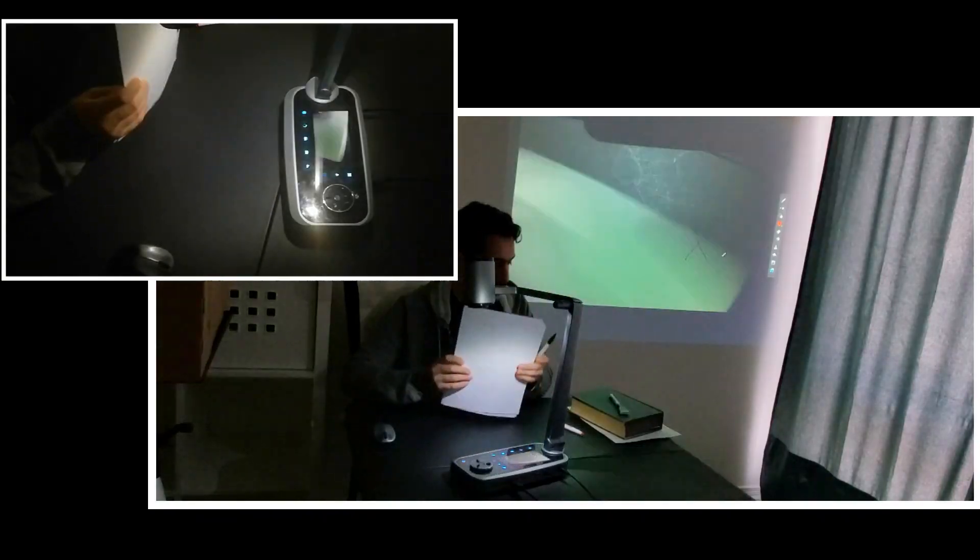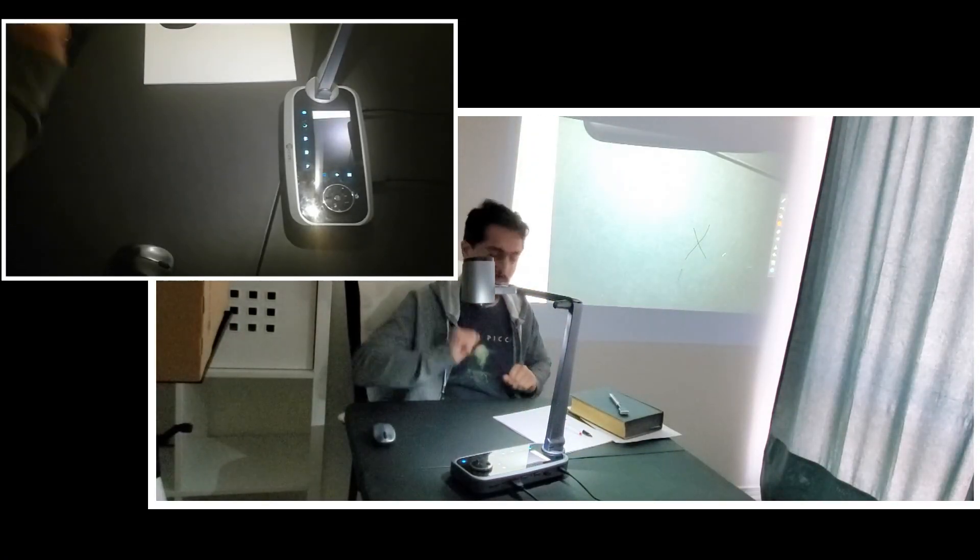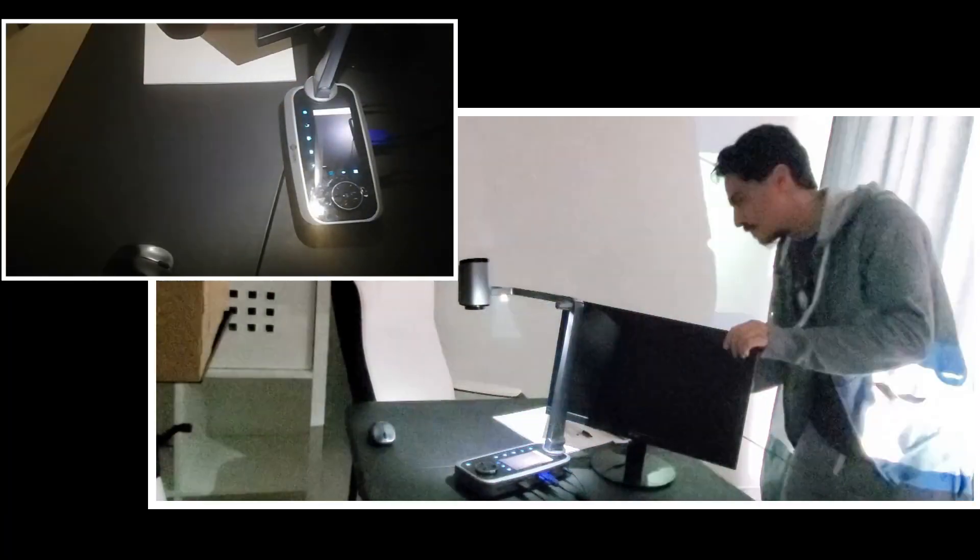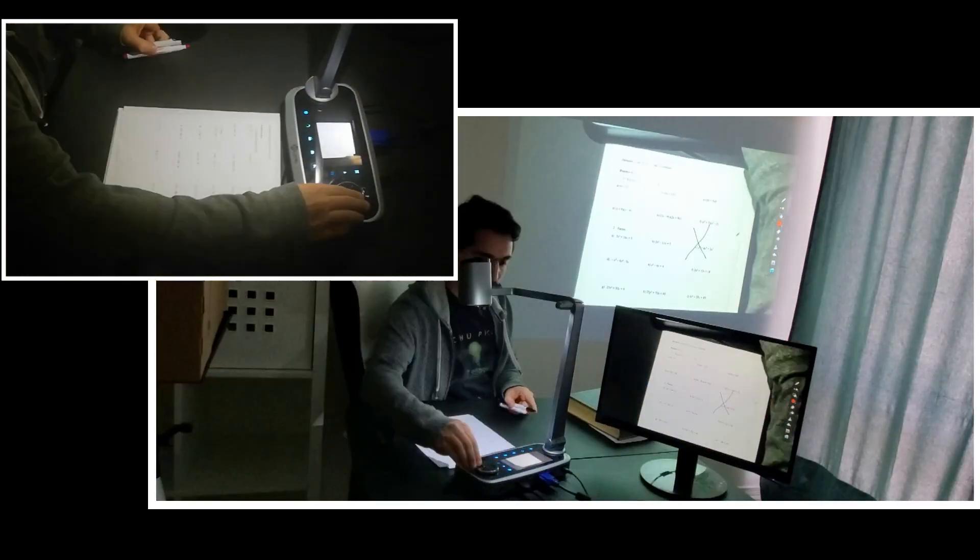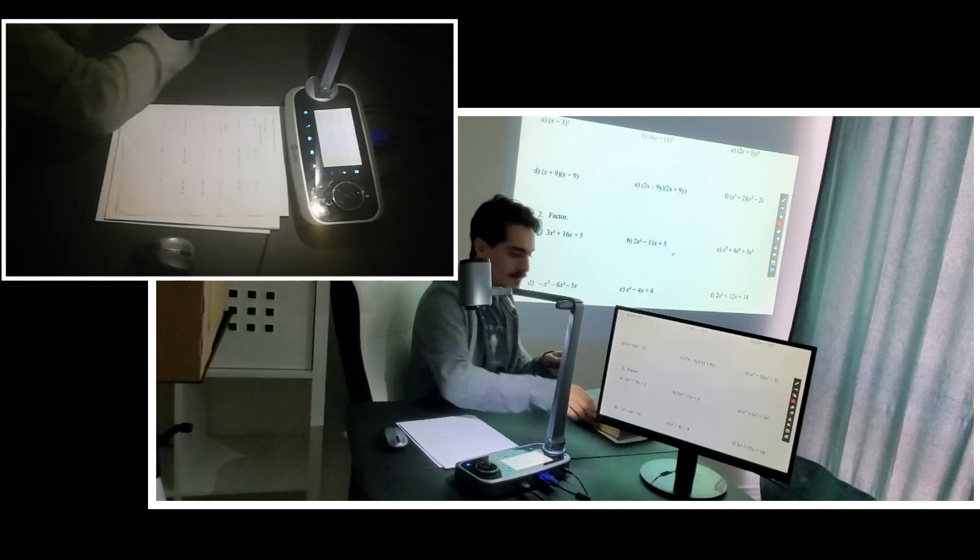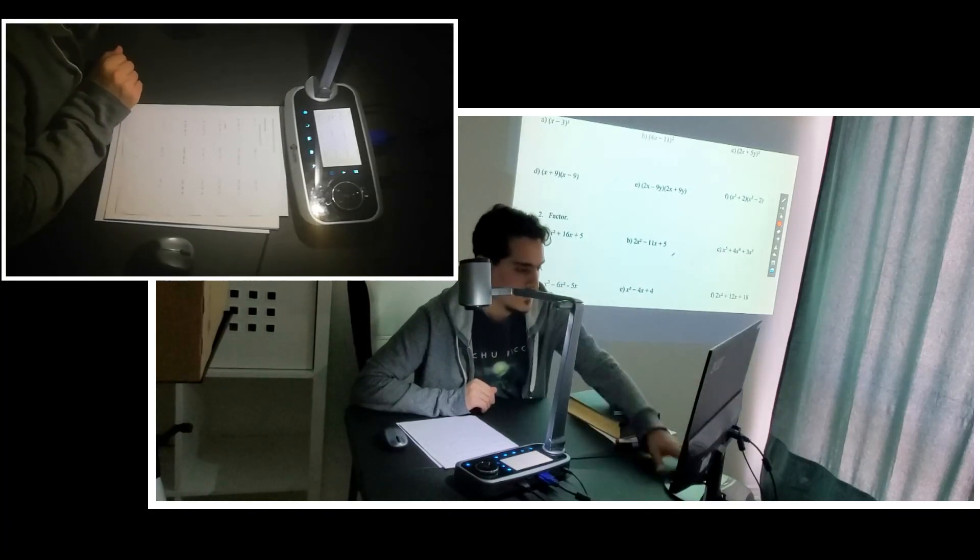When you face your students by using a document camera, you know, projector will be behind you, right? So it's really hard to look at the projector screen and see where the cursor is. To solve this problem, you can also connect a monitor to this document camera. So now I don't need to look at the projector screen. I can use the monitor in front of me, see where the cursor is and write clearly.